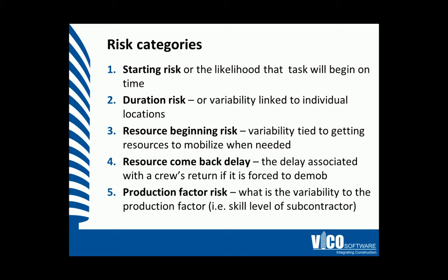Number four is the resources come back delay, or the delay associated with the crew's return if it is forced to demobilize. And finally, number five is production factor risk, which is the variability of the production factor — for example, the skill level of a subcontractor.